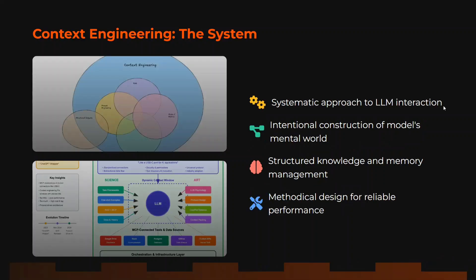When talking about context engineering, it is more systematic. It's not completely driven by vibe — it's proper planning. You are intentionally constructing the model's mental world. Before you start prompting the model, you are providing it with the necessary information and building its context. For example, if you want it to write a blog, you first provide it with: I am a so-and-so writer, I write in this domain, I want a friendly tone, I don't want to use jargons.